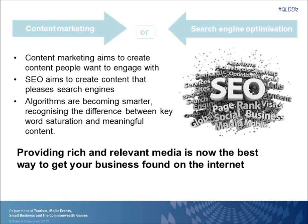The difference between content marketing and SEO is that content marketing aims to create content that people want to read and engage with, whereas SEO's aim is to create content that pleases search engines. What this means for business is that publishing more quality online content is now the best way to get your business found on the internet. Algorithms within search engines are becoming very smart and they're recognising the difference between keyword saturation and meaningful content, which is something we all need to be very aware of.